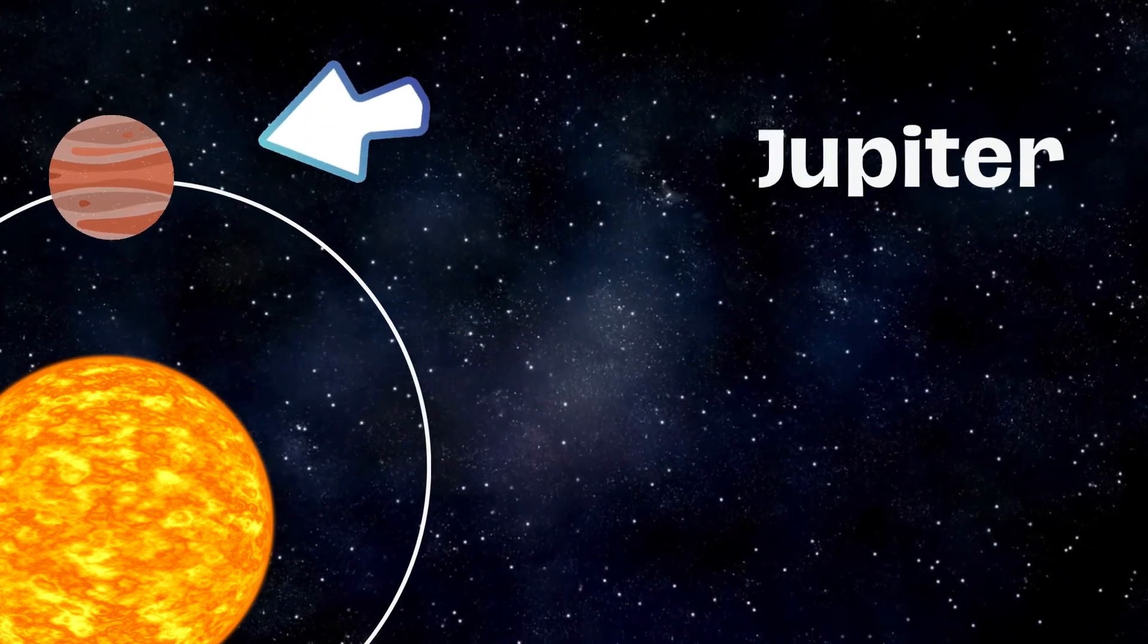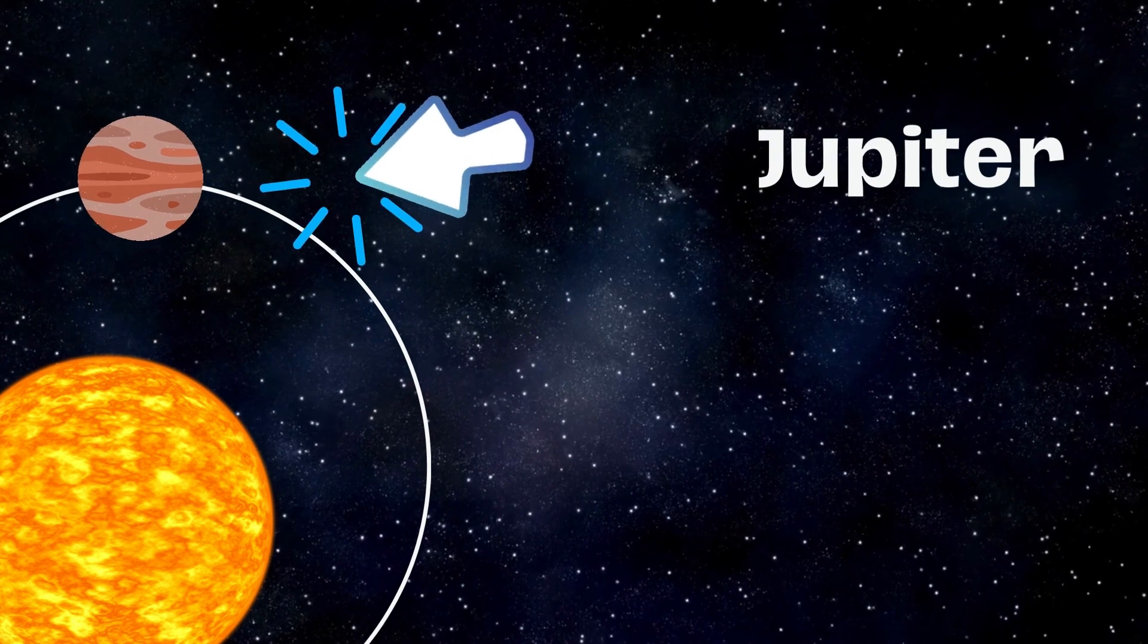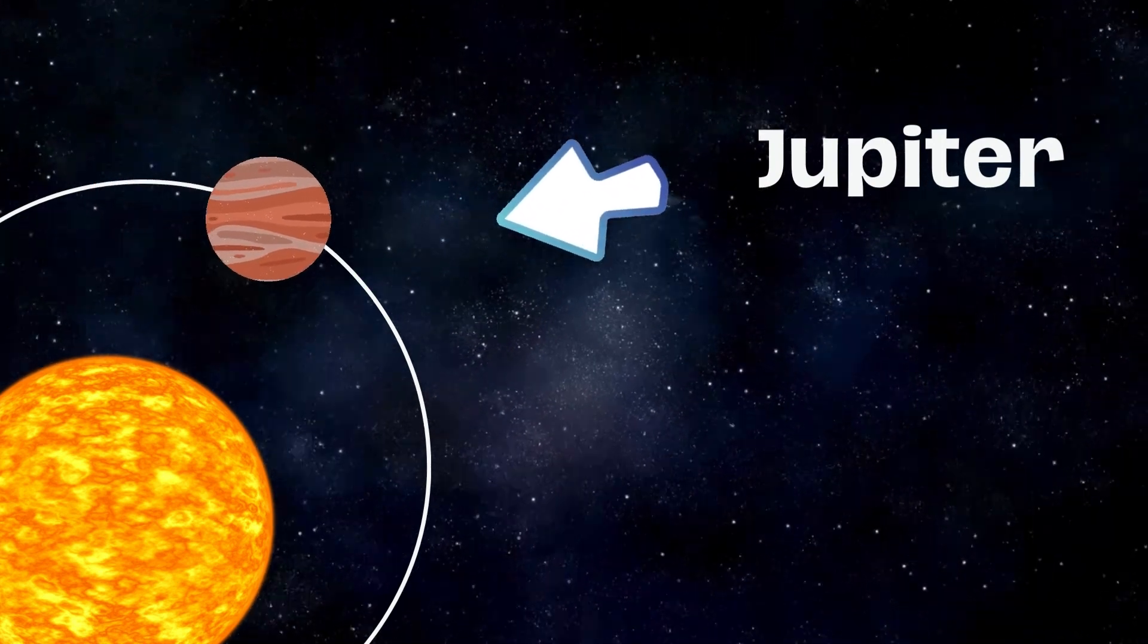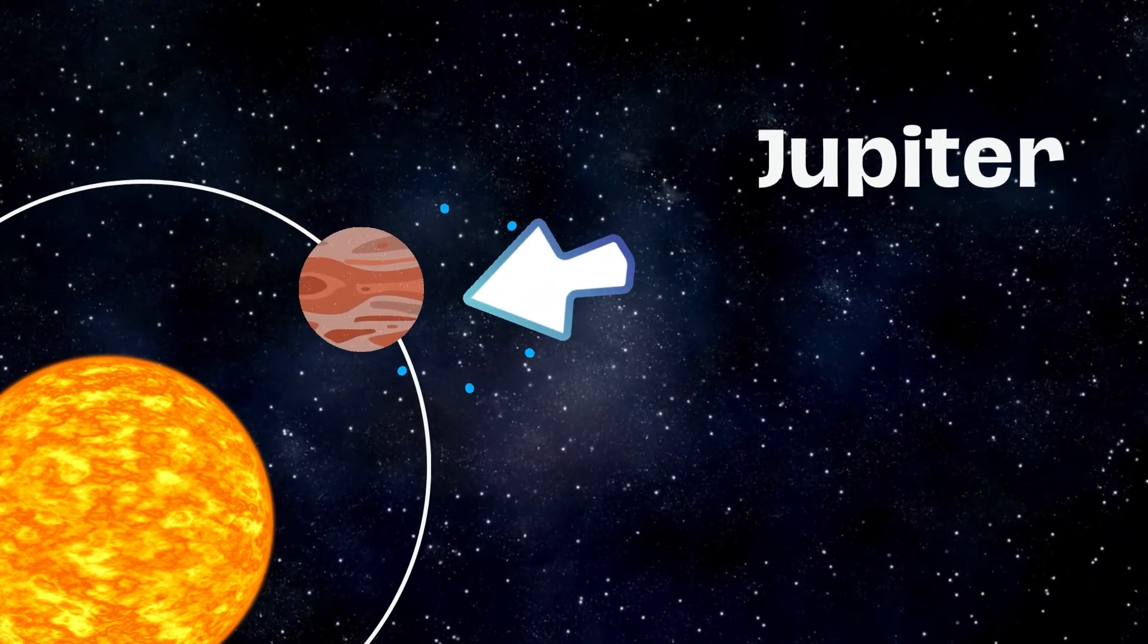Jupiter, the largest planet in our solar system. It's like a giant gas ball with a big red spot called the great red spot.